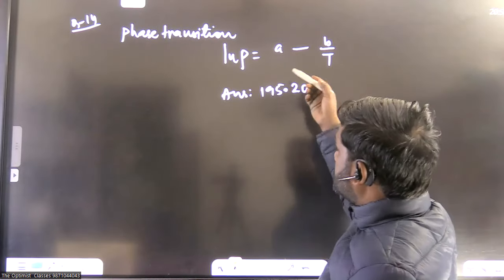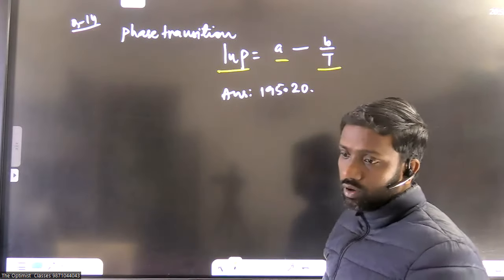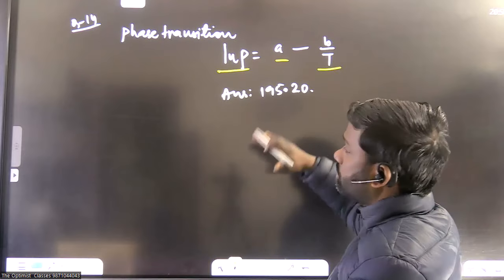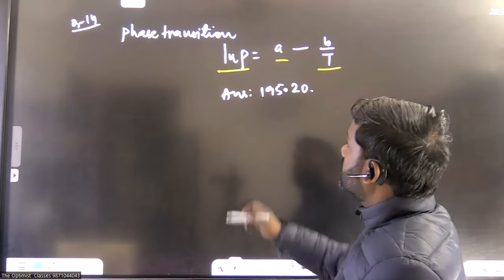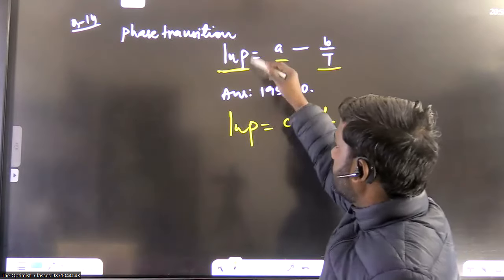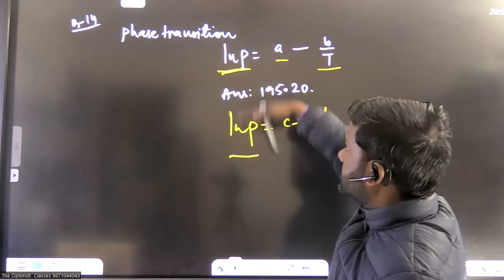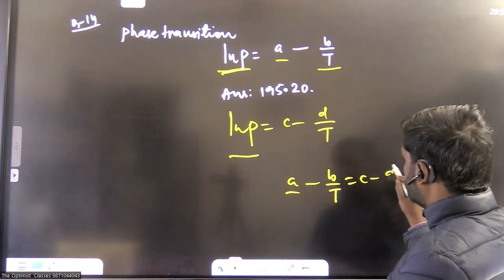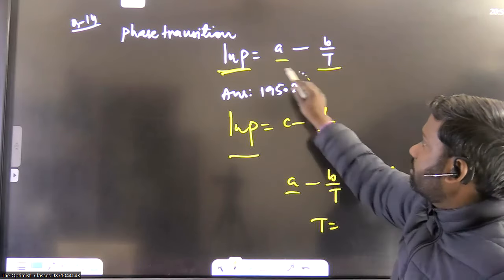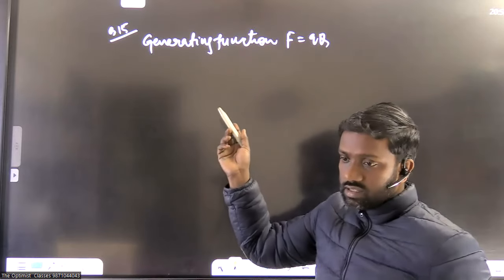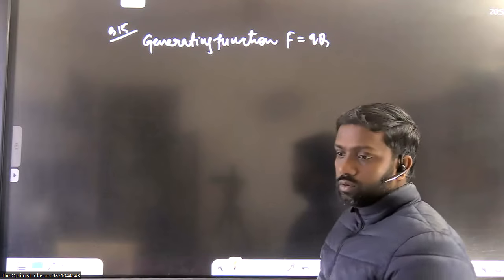There was a phase transition question. At the triple point the system is in equilibrium, so pressure values for the two states are equal. Two relations of the form ln P = C − D/T were given for two states. Equating them and solving for T gives the triple point temperature, which comes out to approximately 195.20.